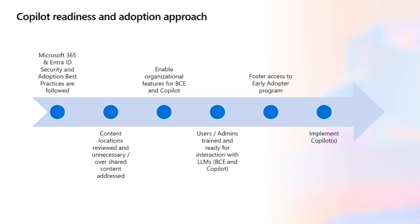It really starts with best practices — making sure we're following best practices for properly securing identity and access in your organization. We're going to review all the content locations: where does your data live? SharePoint, Teams, OneDrive, maybe other sources you want to bring in to take advantage of co-pilot. We'll go through configuration and enable those features in your tenant. Then we'll jump into training — getting your users and admins ready to interact with Bing Chat Enterprise and co-pilot using the large language model and prompt engineering. Since co-pilot is not yet released, Finch Loom will foster access to the early adopter program to get your organization up to speed quickly.